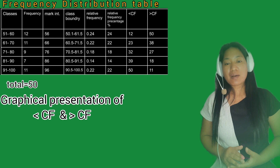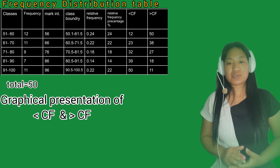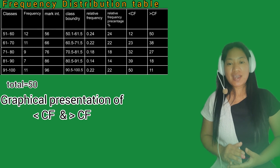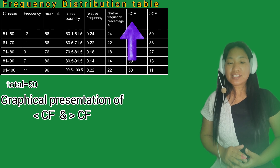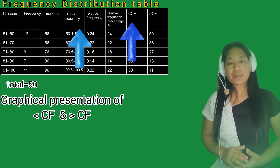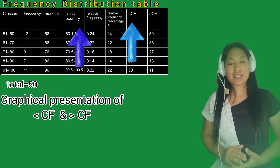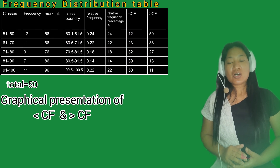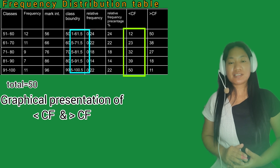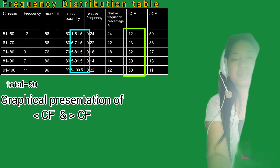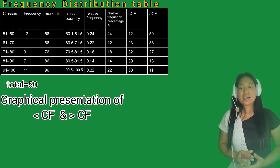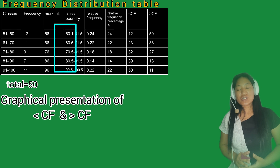So what we need are the left shift cumulative frequency and right shift cumulative frequency, and the upper and lower class boundary of each class. For the left shift cumulative frequency, we need the left shift cumulative frequency numbers that correspond to the upper boundary in our frequency distribution table.